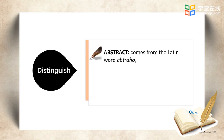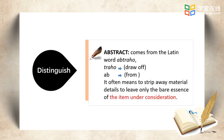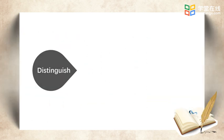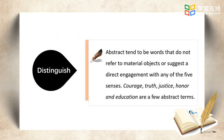Abstract comes from the Latin word abstraho — traho means to draw off, ab means from. It often means to strip away material details to leave only the bare essence of the item under consideration. Abstract words tend not to refer to material objects or suggest a direct engagement with any of the five senses. Courage, truth, justice, honor, and education are a few abstract terms.